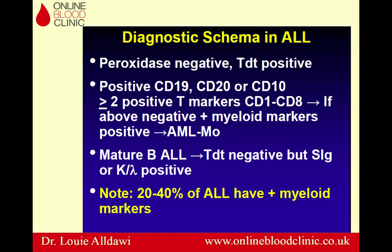Now we'll talk about how flow cytometry can be used to diagnose leukemias and lymphomas, starting with acute lymphocytic leukemia (ALL). ALL will be myeloperoxidase negative (myeloperoxidase is a myeloid marker) and TdT positive (TdT is an immature marker for lymphoid cells). To sub-classify ALL: if cells show positivity for CD19, CD20, or CD10, this is common ALL or pre-B ALL. If they express more than two positive T-cell markers (CD1–CD8 are T-cell markers; CD19–CD20 are B-cell markers), they are T-cell ALL. If the above are negative and myeloid markers are present, this is M0/M1 AML. Mature B-cell ALL will be TdT negative and surface immunoglobulin positive. Twenty to forty percent of ALL cases will have positive myeloid markers.